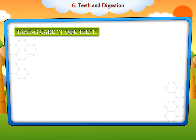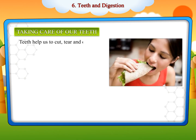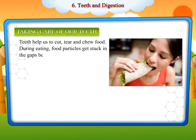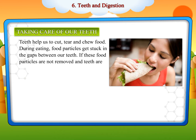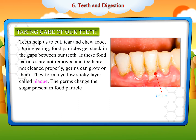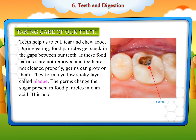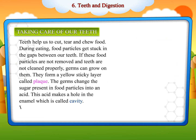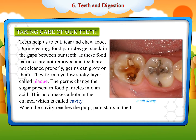Teeth help us to cut, tear, and chew food. During eating, food particles get stuck in the gaps between our teeth. If these food particles are not removed and teeth are not cleaned properly, germs can grow on them and form a yellow sticky layer called plaque. The germs change the sugar present in food particles into an acid. This acid makes a hole in the enamel, which is called a cavity. When the cavity reaches the pulp, pain starts in the tooth. This is called tooth decay.